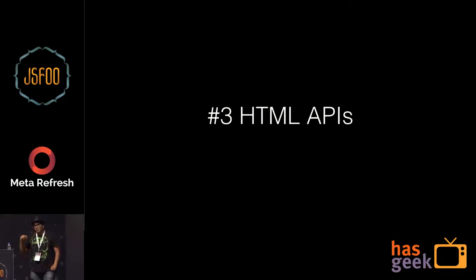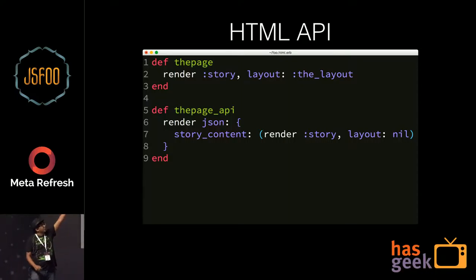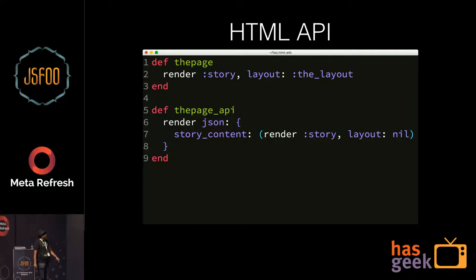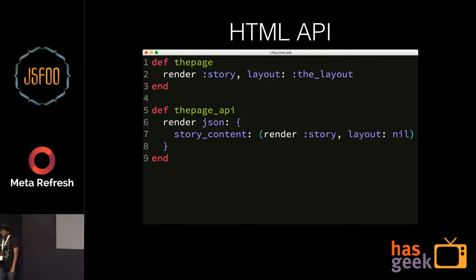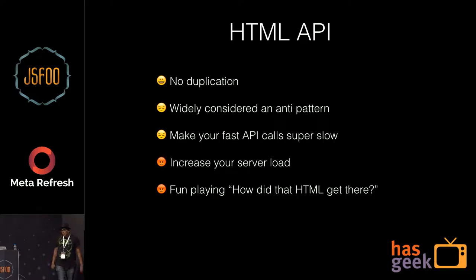This is the first thing I see every single programmer do on every single project. Switching to Ruby: in essence, when I come to the story page I'll render the story page with a layout, and when somebody calls the API for the same page I'll render the exact same story with no layout and return it as a JSON object. This looks like it works because it works really well on your development laptop — and there's no duplication. But it's widely considered an anti-pattern.